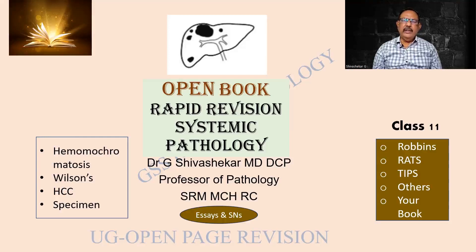Wilson's disease is not an uncommon question. There is a deposition of copper, you can get macronodular cirrhosis, and there can be hepatolenticular degeneration. Kayser-Fleischer rings can be present. The special stain to mention is copper rubeanic acid.